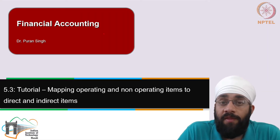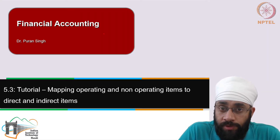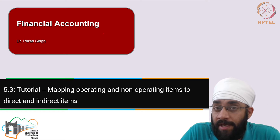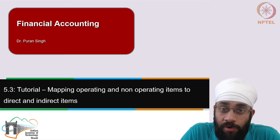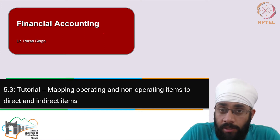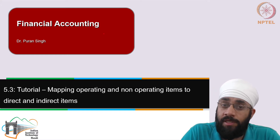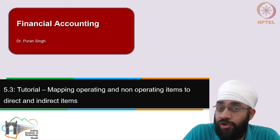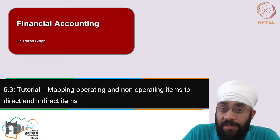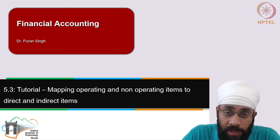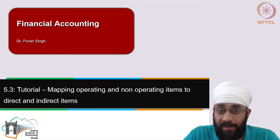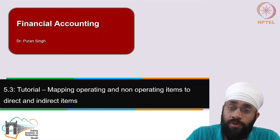Hi, this is a tutorial. In the first few videos of the course, we spoke about the categorization of incomes and expenses, where we said expenses could be operating or non-operating, and incomes could also be operating or non-operating in nature. However, while discussing the final accounts, we have switched to another categorization where we categorize expenses into direct and indirect. In this video, I am going to clarify these two different types of categories and try to map them to each other.